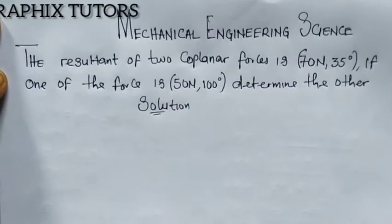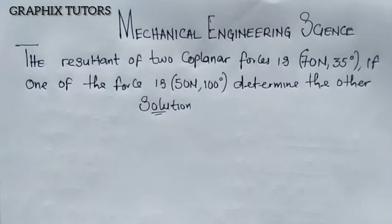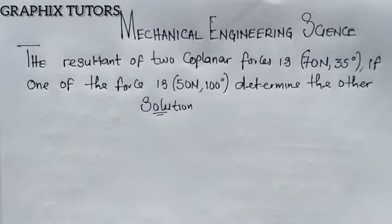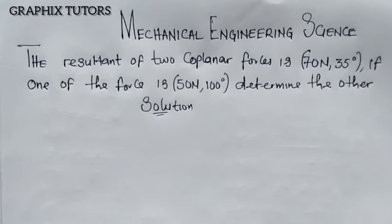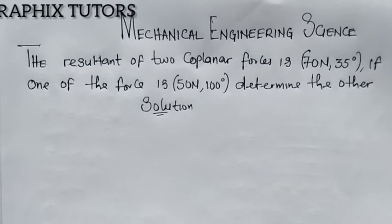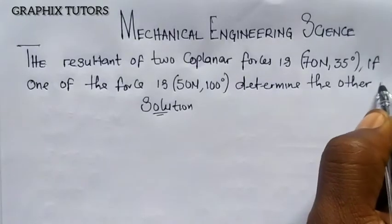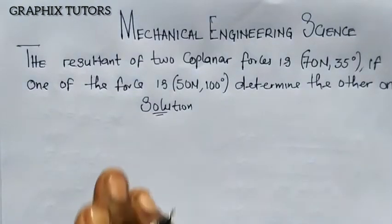Good everyone, my name is Graphics. Today we want to analyze this question on mechanical science, which is on resultant force. It says that the resultant of two coplanar forces is 70 newton at 35 degrees. If one of the forces is 50 newton at 100 degrees, determine the other one.